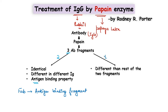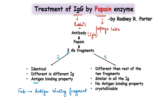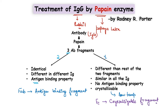The third fragment was different from the other two. It was similar in all immunoglobulins, had no antigen-binding property, but had the additional property of being crystallizable at low temperature. Rodney R. Potter named this the Fc fragment, where Fc stands for crystallizable fragment. The molecular weight of the FAB fragment was approximately 45 kDa, and that of the Fc fragment was approximately 50 kDa.